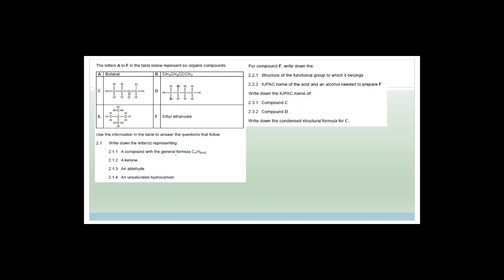A compound with the general formula CₙH₂ₙ₊₂ is definitely an alkane. Checking compound E: counting gives C₅H₁₂, which fits CₙH₂ₙ₊₂, so the correct answer is E. The ketone we identified is C. The aldehyde is A. An unsaturated hydrocarbon has to be B — it's either an alkane or alkyne, so that's obviously B.